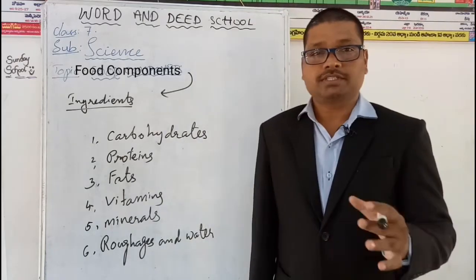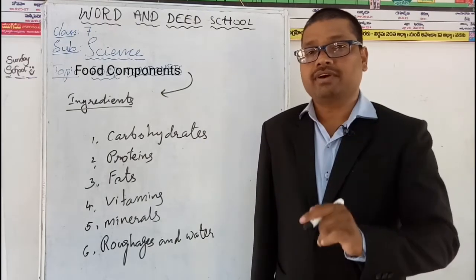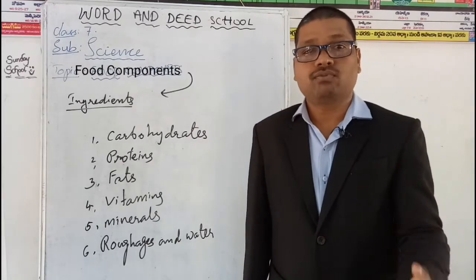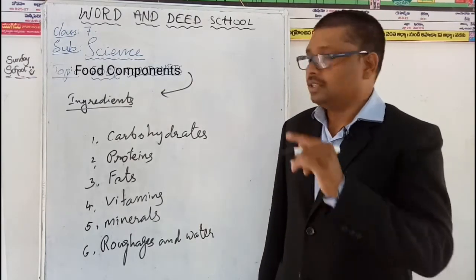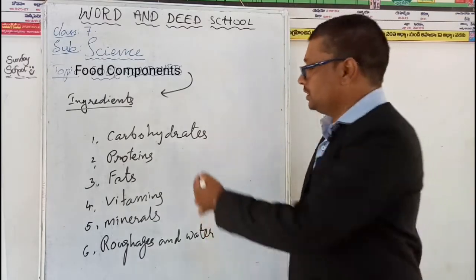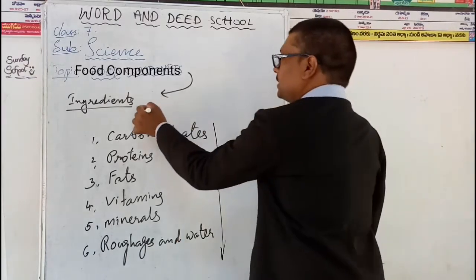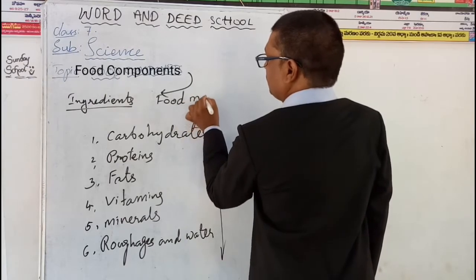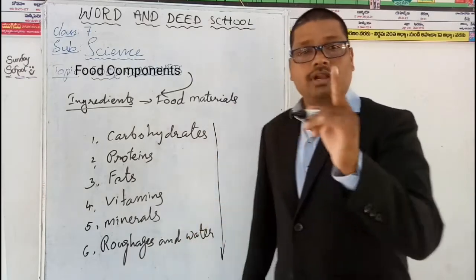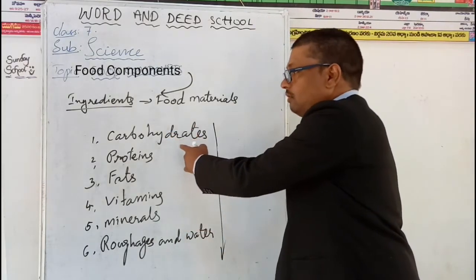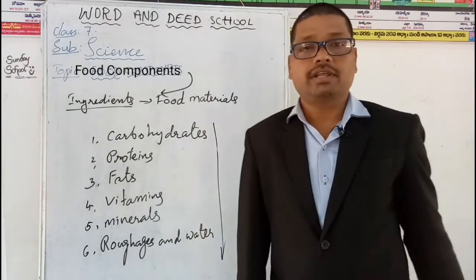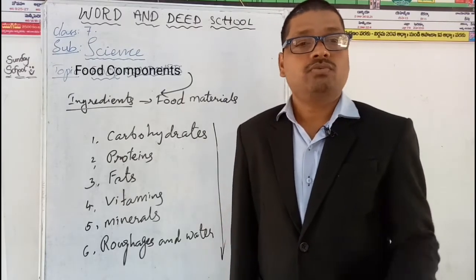These are the food components present in the food that we eat. But we have to identify whether these food components are present in the food we are eating. Let us find the presence of these food components in the given food items. One important thing to understand: food components are the substances in ingredients, and ingredients are the food materials. Let us identify the presence of carbohydrates in the food materials. To identify the presence of food components in food materials, we have to follow some experiments.